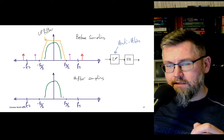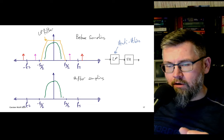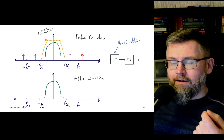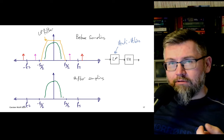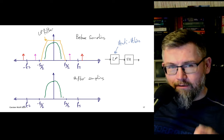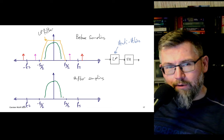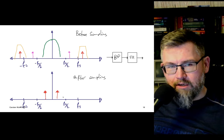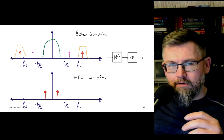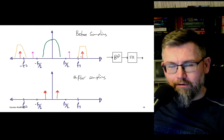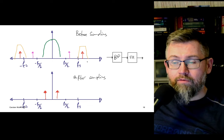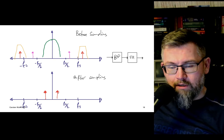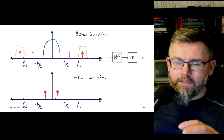Interestingly, sampling doesn't have to operate only on low frequencies. The Nyquist theorem says the bandwidth has to be below half the sampling frequency — not that the signal itself has to be below that. So it's entirely possible to do what's called subsampling. If you add a bandpass filter to remove everything except the signal of interest before sampling, you're only left with what you wanted.